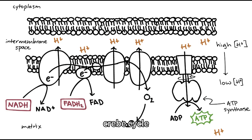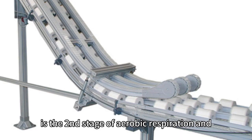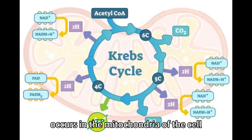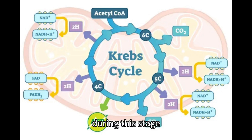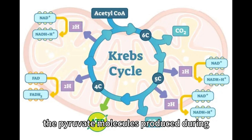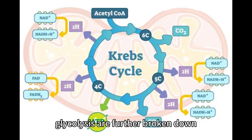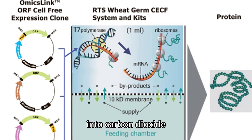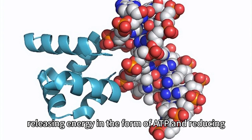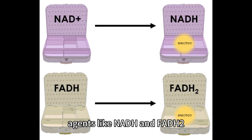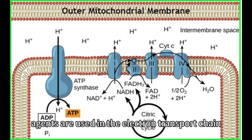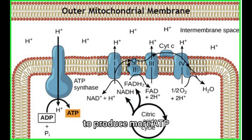The Krebs cycle is the second stage of aerobic respiration and occurs in the mitochondria of the cell. During this stage, the pyruvate molecules produced during glycolysis are further broken down into carbon dioxide, releasing energy in the form of ATP and reducing agents like NADH and FADH2. These reducing agents are used in the electron transport chain to produce more ATP.